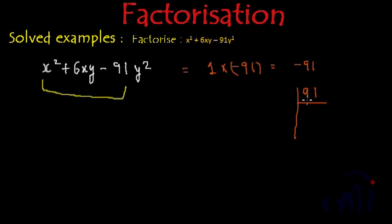So 91 is, I think, divisible by 7. 7 1s are 7. 7 3s are 21. And this 13 is a prime number. So 13 divided by 13 gives us 1. So the factors of 91 are 7 and 13.